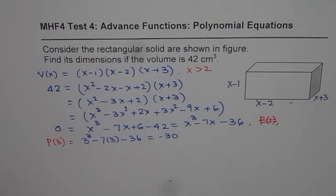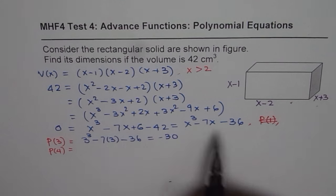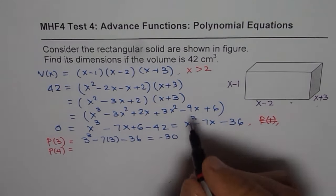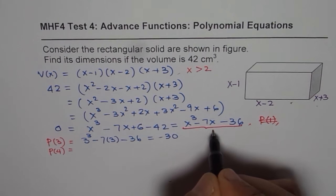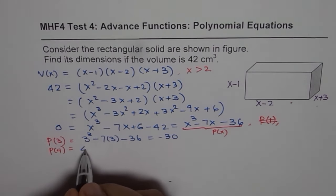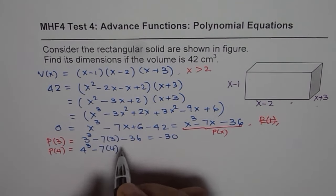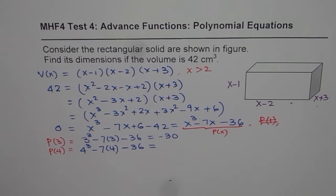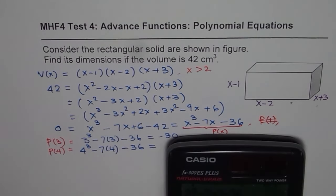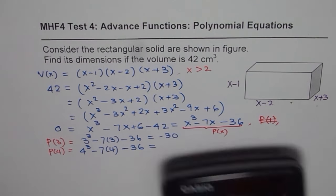Now try p of 4. So that means we will replace x with 4. That is our equation. We are calling this to be our polynomial. So p of 4 will be 4³ minus 7 times 4, which is 28. 64 minus 28 minus 36. So you can again use your calculator. 4³ minus 7 times 4 minus 36. That gives us 0.